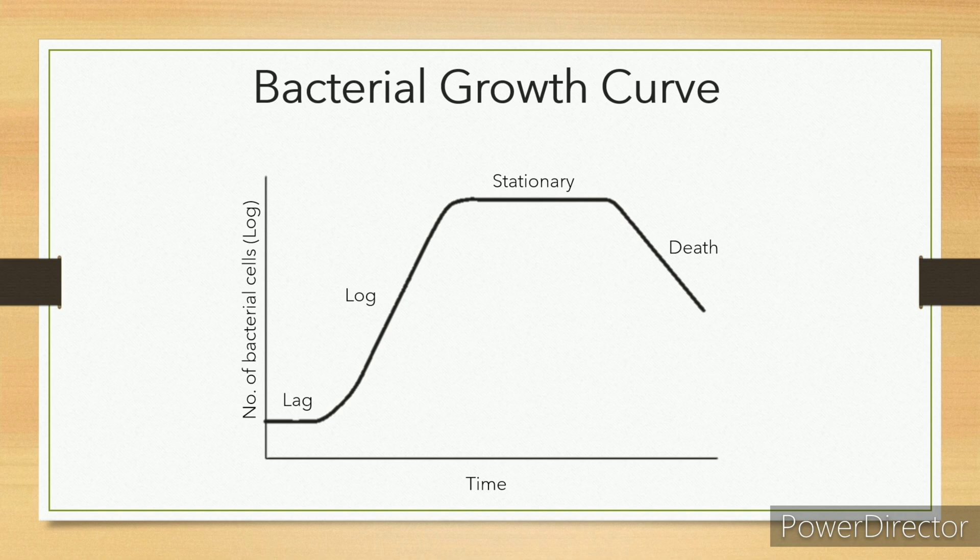Stationary phase: In this phase, overall population remains stable. Death phase: In this phase, total number of viable cells decreases. The numbers of cells decrease at a constant rate.